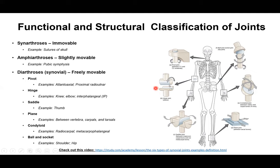Hinge joints have one plane of motion — like a door hinge that can open or close. The elbow joint is a classic example. Saddle joints, such as the thumb joint between the trapezium and the first metacarpal, allow motion in two separate directions, giving the thumb its characteristic range of motion.